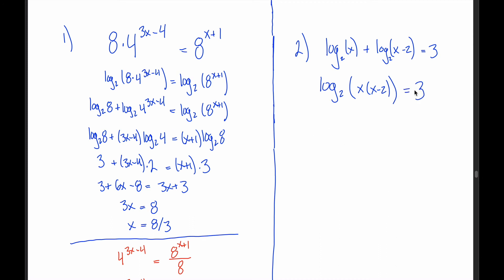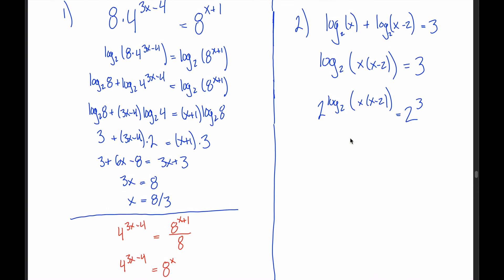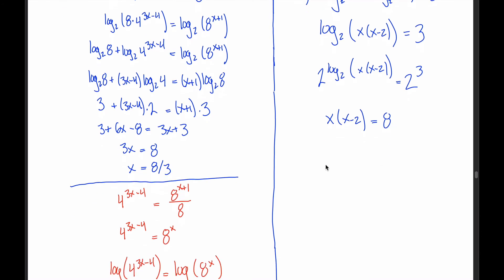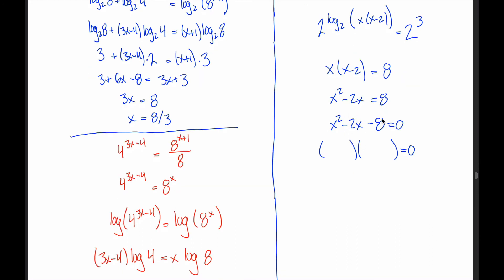Now raise 2 to both sides of the equation. Since the base on the exponent matches the base on the log, they cancel and leave x times (x minus 2) on the left. On the right, 2 cubed equals 8. So solve x times (x minus 2) equals 8, which expands to the quadratic x squared minus 2x minus 8 equals 0.